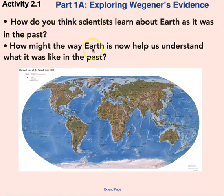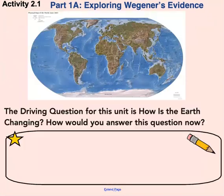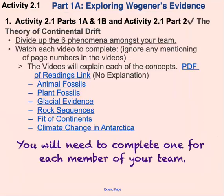Think about: how do you think scientists learn about the earth as it was in the past, and how might the way the earth is now help us understand what the earth was like in the past? In the Baraboo area, for example, when we look at the Baraboo Bluffs — how did they get that way, how were they created? That's really what we're exploring: how was the earth in the past and how did it get to be the way it is today? The first thing you'll answer in your book is the driving question: how is the earth changing? Just a sentence.